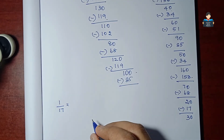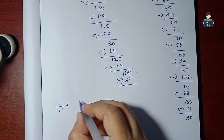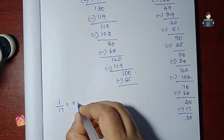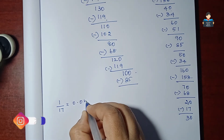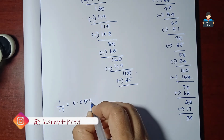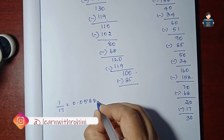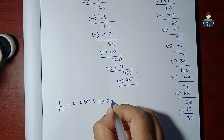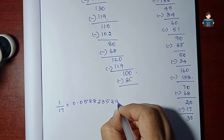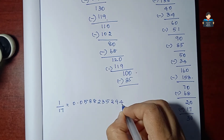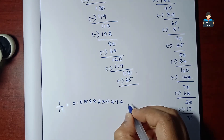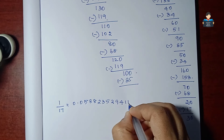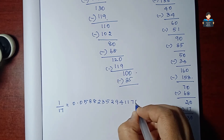So 1 by 17 equals 0.0588235294117647... with the repeating block shown with a bar over it.